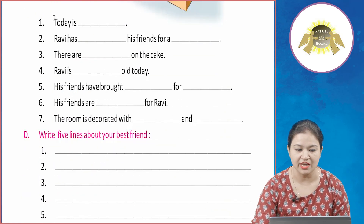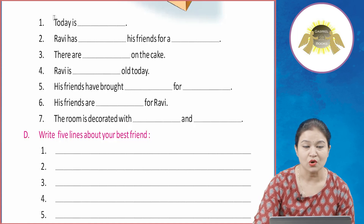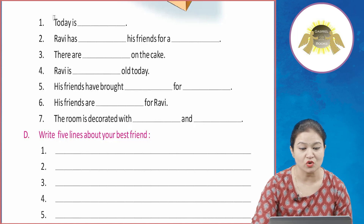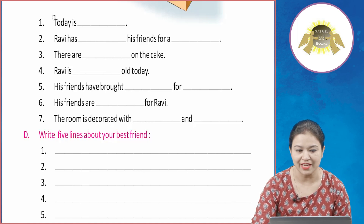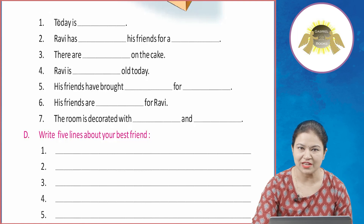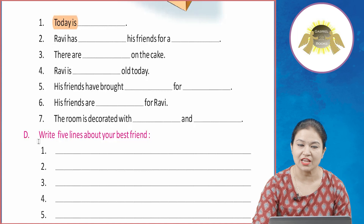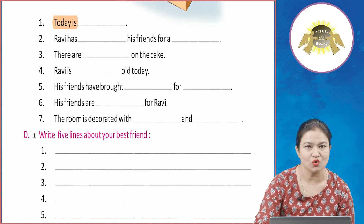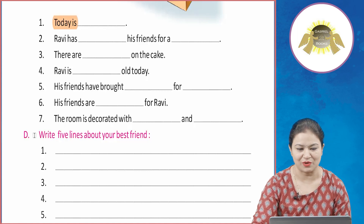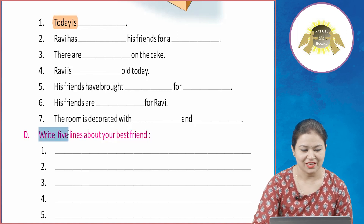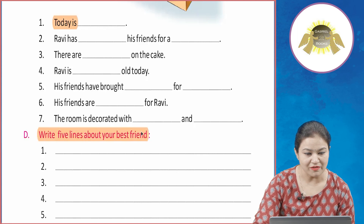Yaha pe aapko picture di gaie hai. Aapko us mein saaf saaf dik raha hai ki ek larka hai Ravi, uska birthday hai, usne aapne friends ko invite kiya hai aur wo cake cut kar raha hai. Toh yaha pe fill in the blanks diya gaya hai — jaise ki 'today is dash' — aap fill karo ge 'today is Ravi's birthday'. Isi tarah aapko baqi ke fill in the blanks ko picture ko dekhte hue fill karna hai.